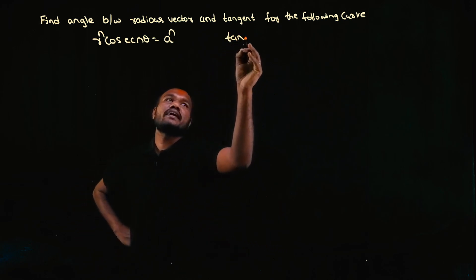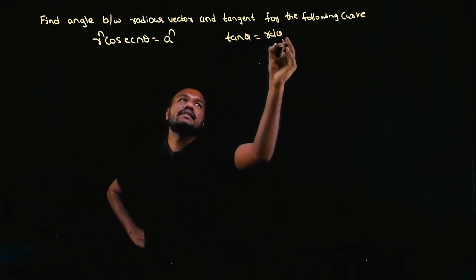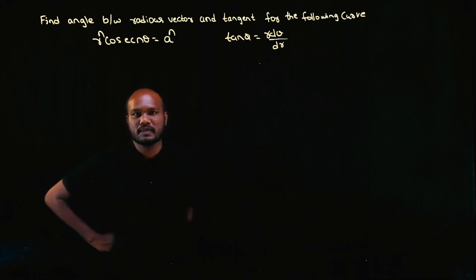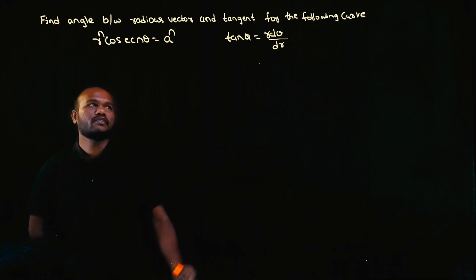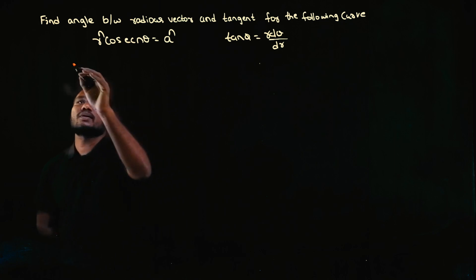To do that, the formula is tan φ = r × dθ/dr. So what we need to do is find dθ/dr. To do that, let's take the logarithm on both sides.